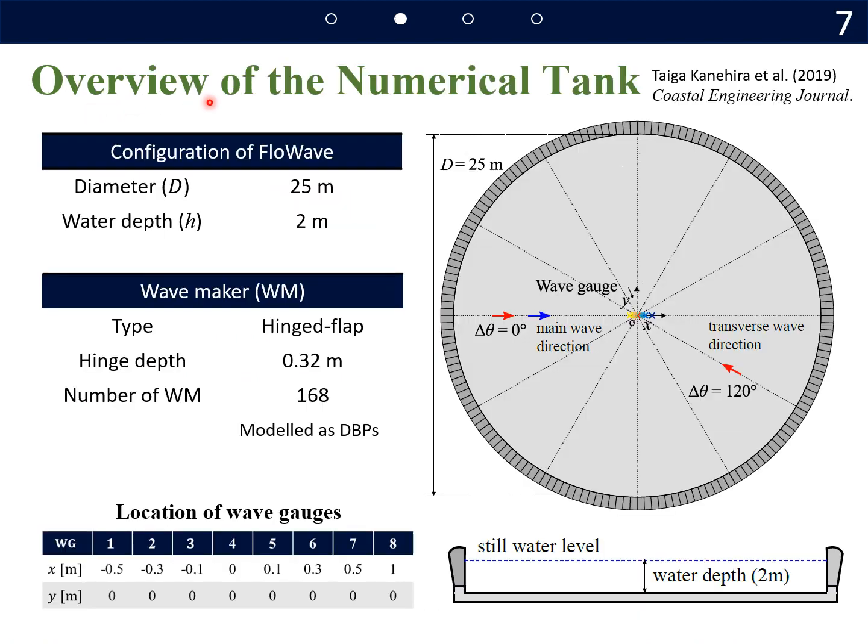Here we show overview of the numerical tank. The numerical wave basin we used is based on a circular wave tank, FloWave, at the University of Edinburgh. It has 25-meter diameter and 2-meter water depth of a fluid domain. And we installed 168 hinged flap type wave makers around a circular rim, as we can see here.